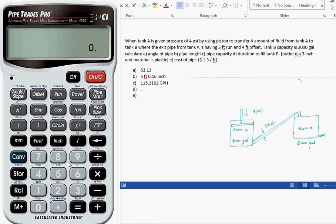Let me recheck: 3,000 divided by 115.2102. So 26 hours is the duration required to fill tank B. That means it's more than one day.